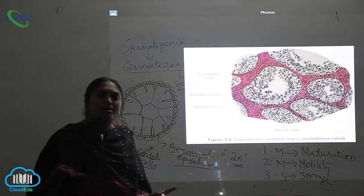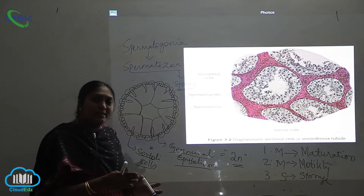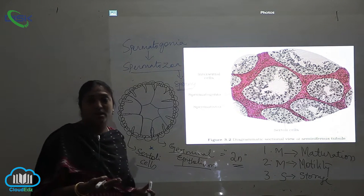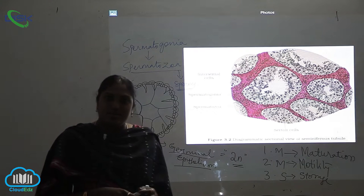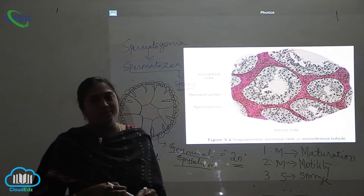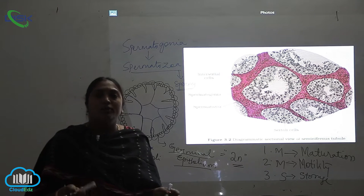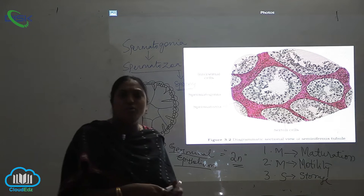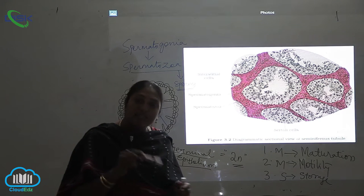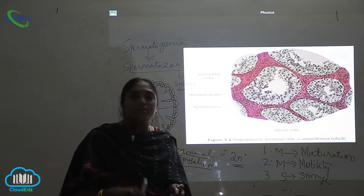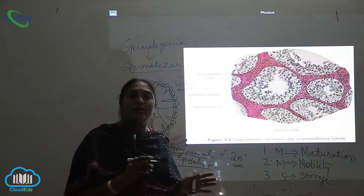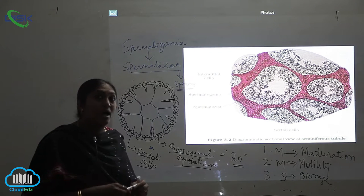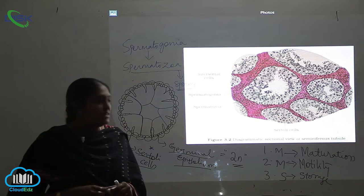From where are the sperms getting this motility? In order to move from one place to another, they need energy. Even in lower or higher organisms, movement from one place to another is called locomotion. Energy is needed in the same way inside our body when particular organ products are involved.